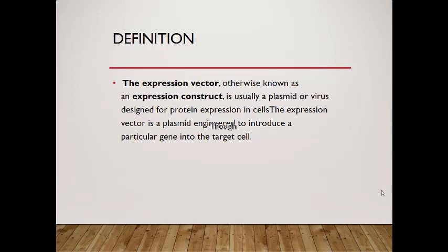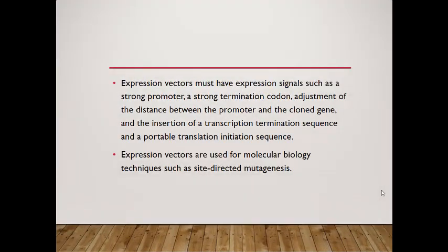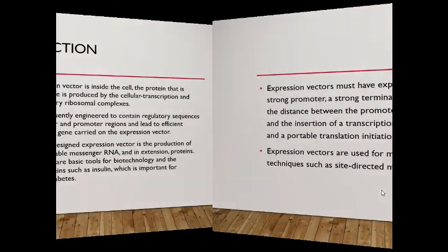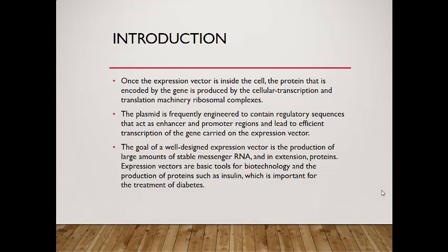Special vectors mostly have expression signals such as a strong promoter, termination signal, codon, adjustment of distance between promoter and ribosome binding site, and insertion of transcription termination sequence and a portable translation-initiation sequence. Special vectors are used for molecular biology techniques such as high-level expression. The second vector type in cells is used to produce proteins that are processed by the cellular transcription and processing machinery including the ribosomal complex. The goal of a well-driven expression vector is the production of large amounts of stable protein.